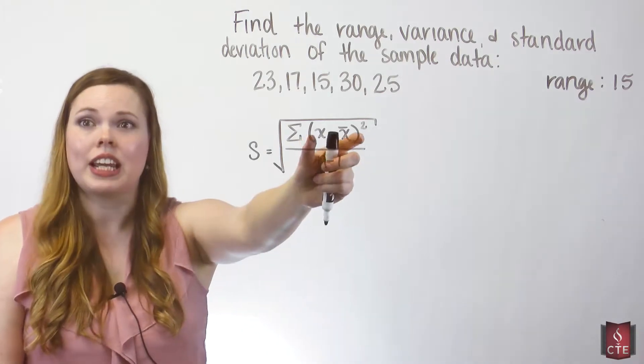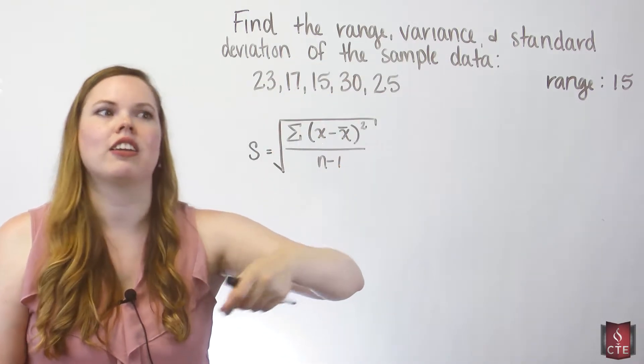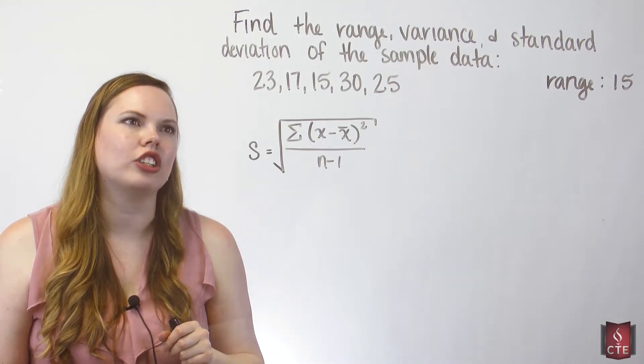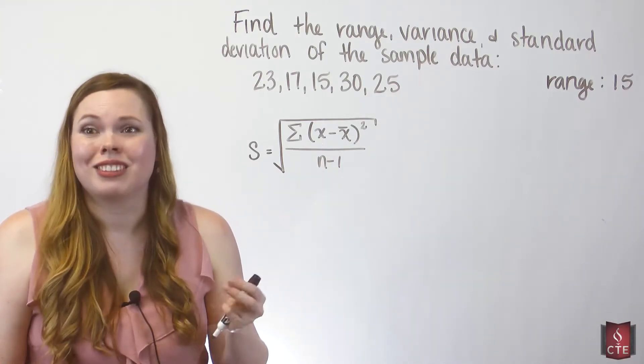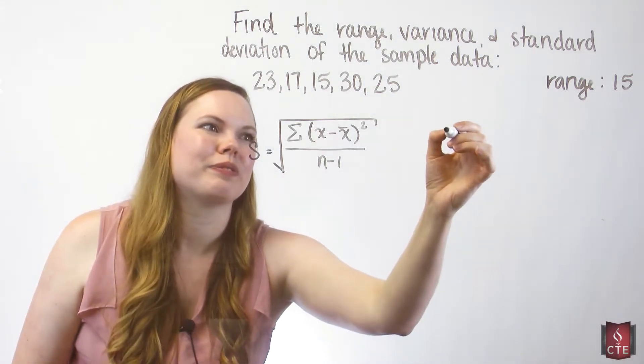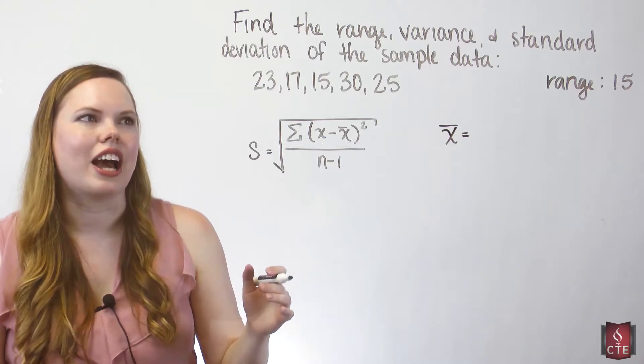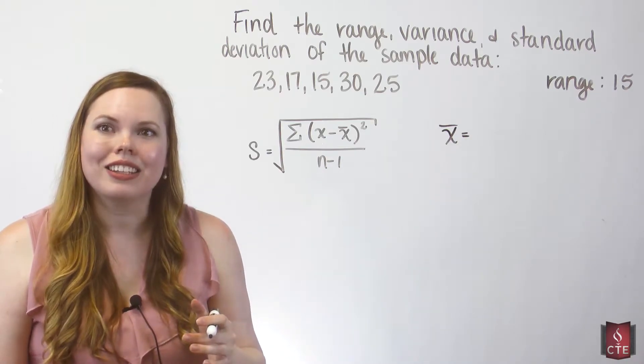So we're going to be taking each x, subtracting the mean, and squaring it as we do this standard deviation. So I need the mean. Let's find the mean really quick. The mean is all the data values added together and then divided by n, the sample size.